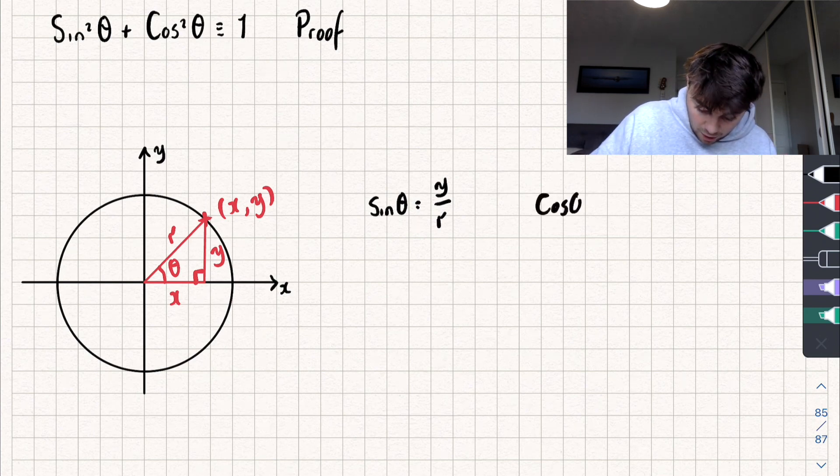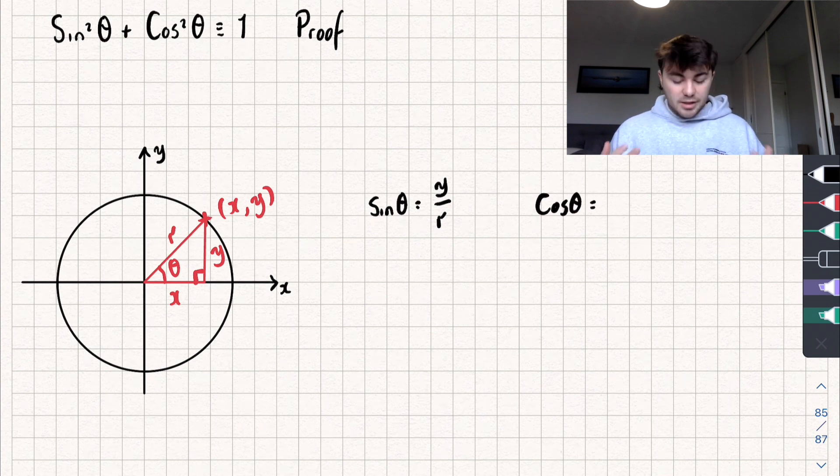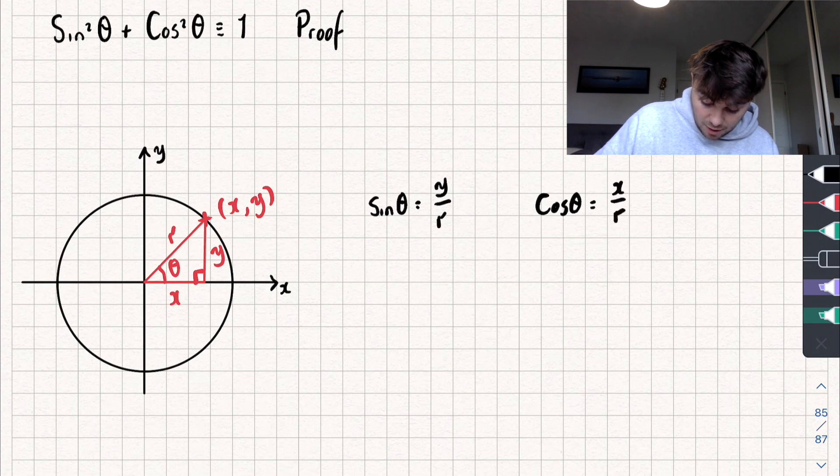I could also say that cosine of our angle theta, that's equal to our adjacent divided by our hypotenuse. So that's going to be equal to x divided by r like so.